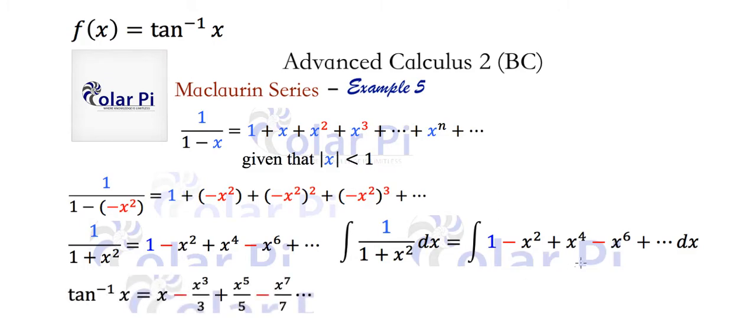And then term-by-term integration of this on the right side will give us what we have here. And so there it is, the Maclaurin series for arc tan of x. And if you want to write it in closed form, then it will look like this. Keep watching. Take care.